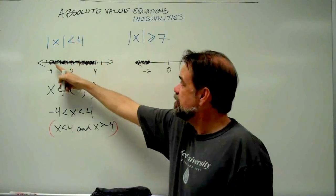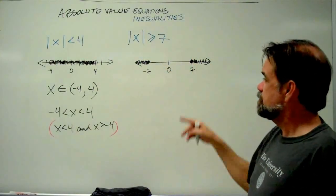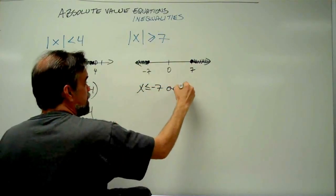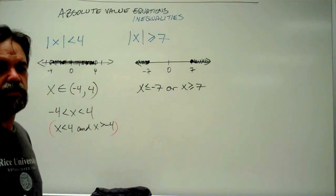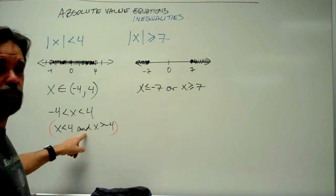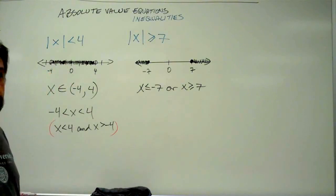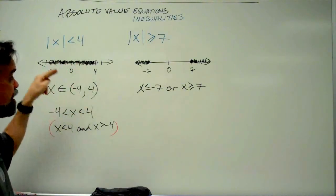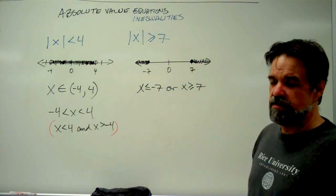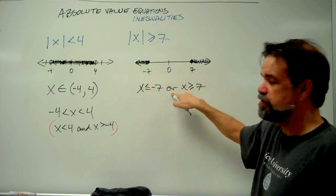Notice: when your absolute value is less than, you fill in between the dots on the number line. When the absolute value is greater than, you fill in the outside of the dots. Now, when I said 'and' earlier, that's because x has to be both less than 4 and greater than negative 4 — it has to meet both criteria. Over here, x cannot be bigger than 7 and less than negative 7 simultaneously — that's like saying you're both short and tall at the same time. That simply cannot happen, which is why we use the word 'or.'